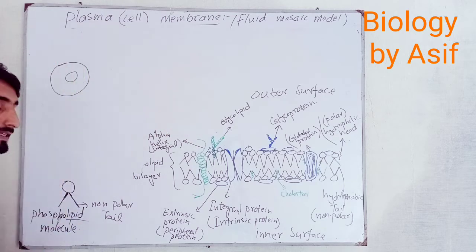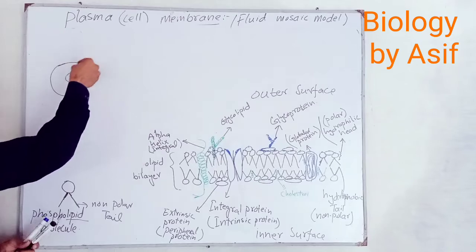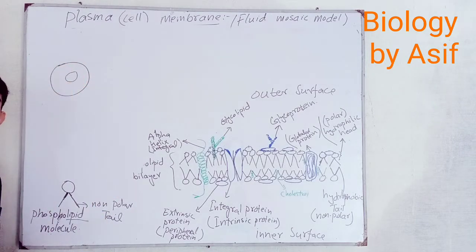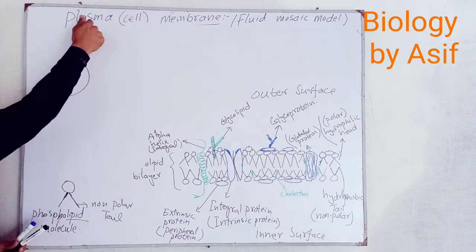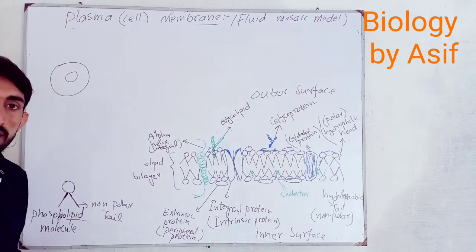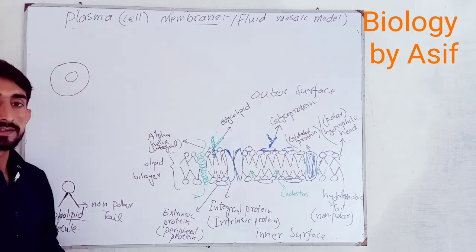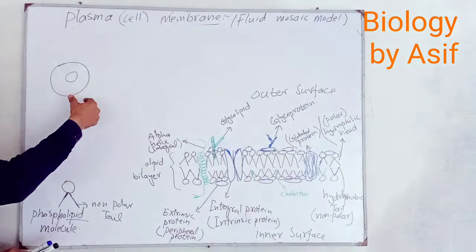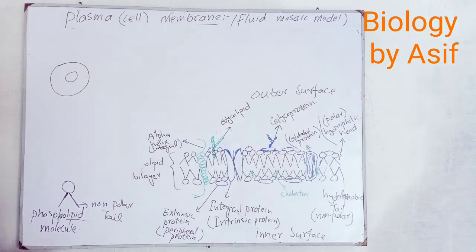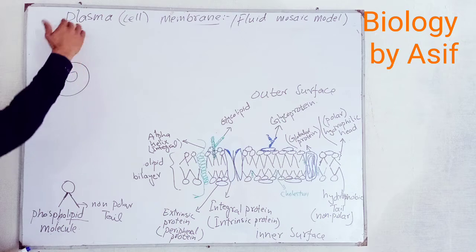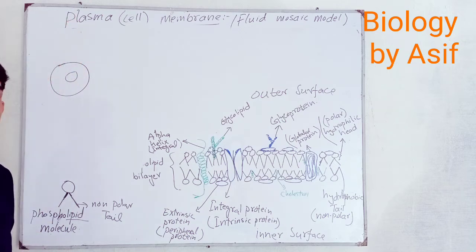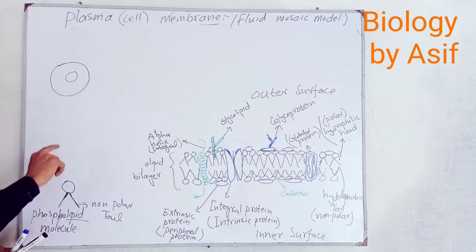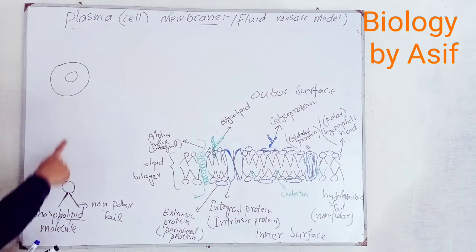When we go inside this cell, we find a fluid, which is called Plasma. So, Cell Membrane is also known as Plasma Membrane because when we go inside the cell, we find that fluid called Plasma. The Plasma Membrane is also part of the endomembrane system.